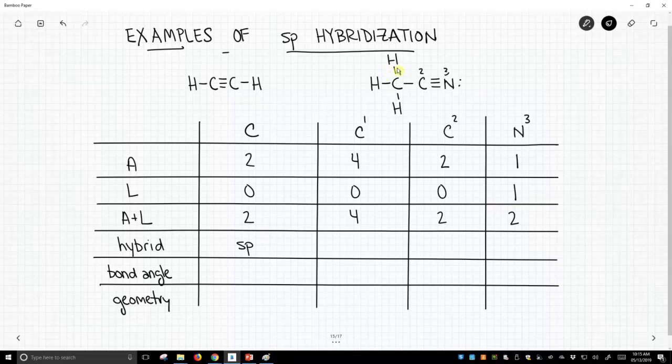Now this carbon, carbon 1, has four attached atoms and lone pairs. That's going to be different. That's going to be sp3. Carbon 2 has A plus L equals 2. That's sp. And this last nitrogen is sp hybridized as well.